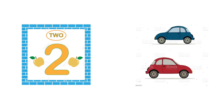And now let's move to number two. As you can see in the picture, this is number two. Can you show me two fingers? Well done! Now let's count the apples. How many apples do you see? One, two — so we have two apples. Let's take a look at the cars. How many cars do you see? One, two — we have a blue car and a red car, so we have two cars.